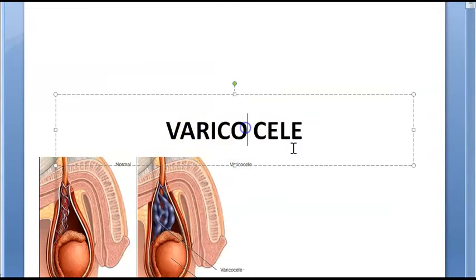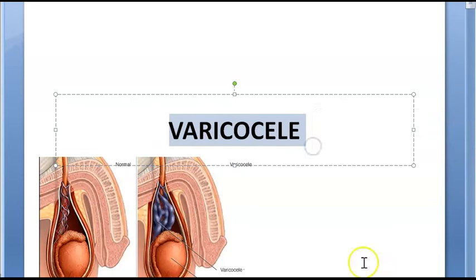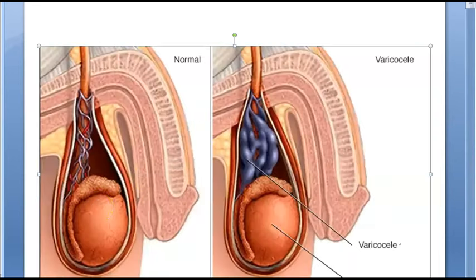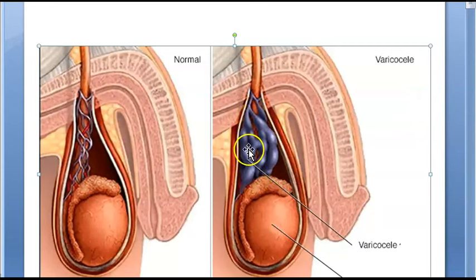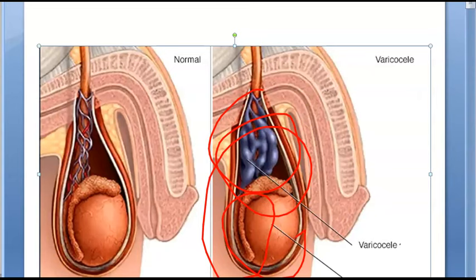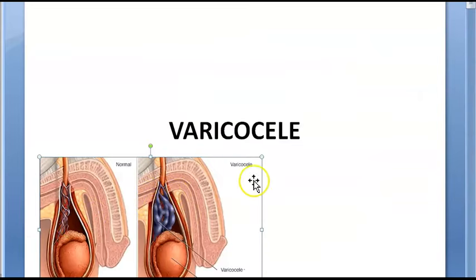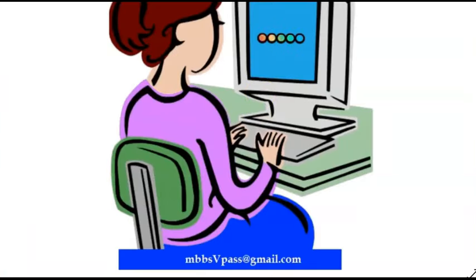In this video we want to look at varicocele. Looking at this photo, you can see the testis and there is a plexus around the spermatic cord. The venous plexus seems to have some stasis of blood. If this happens, there could be an increase in temperature and a swelling the person can notice. If there is swelling and increased temperature, there could be infertility, because the whole point of that anatomy is to keep the testis cool.